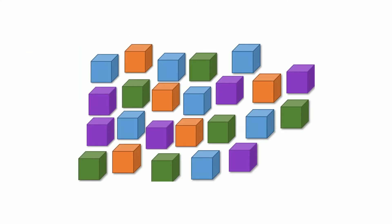Here we have a group of blocks. How could we group the blocks using place value to count them? What are the values that we know in place value? Are the values ones and tens? Could we group the blocks into tens and ones to count them?